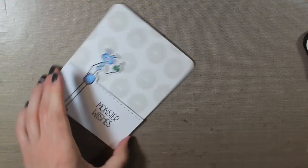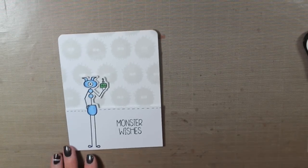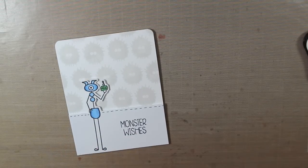So I'm going to round the upper right hand and left hand corner with my We Are Memory Keepers quarter-inch corner chomper. It's kind of a mouthful to say, a tongue twister.